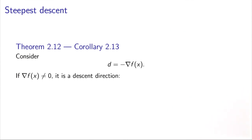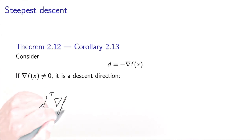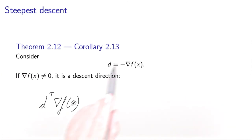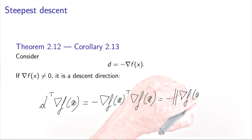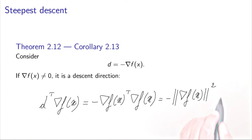The most interesting descent direction is provided by the gradient itself. If you take d equal to minus the gradient, and the gradient is not zero, then d is a descent direction. To show this, we write the inner product between the direction and the gradient, which is the directional derivative of f along d at x. Since d equals minus the gradient, this becomes minus the gradient of f transpose times the gradient of f, which equals minus the squared norm of the gradient. Because the norm of the gradient is not zero, this is strictly negative, and therefore d is a descent direction.